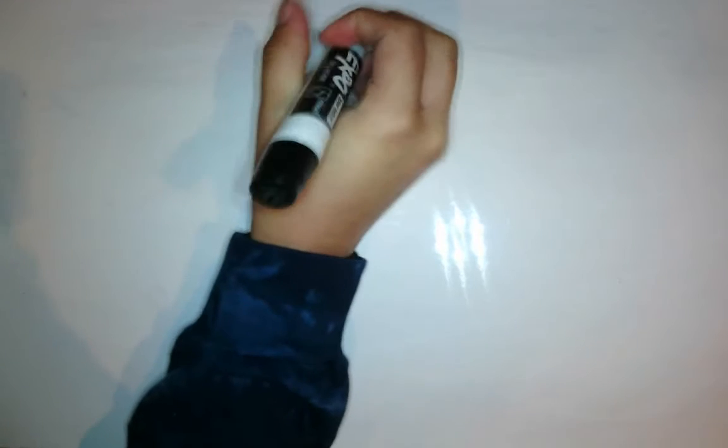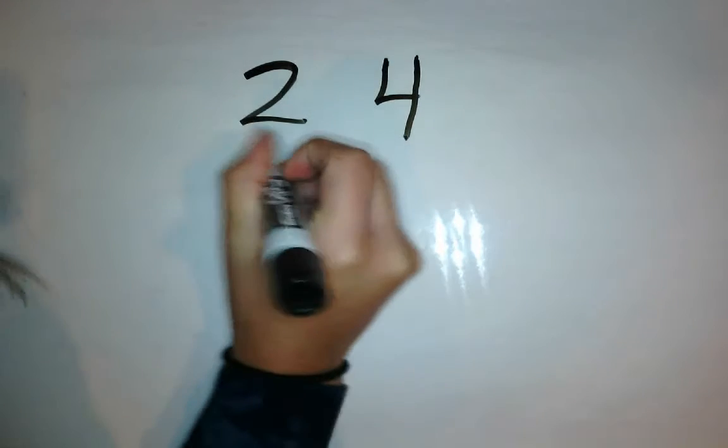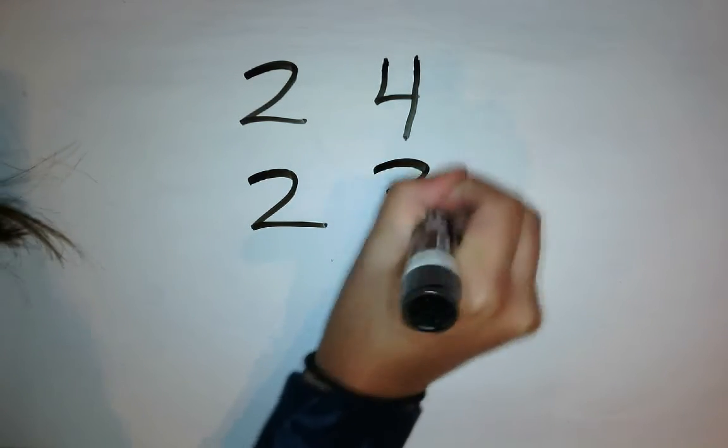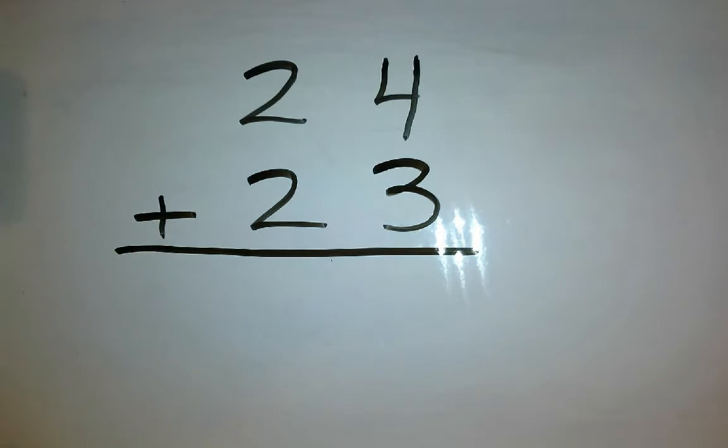We're going to start off with our two-digit number. Let's go with 24, plus we'll do 23. So there's my problem. It looks a little scary right now.